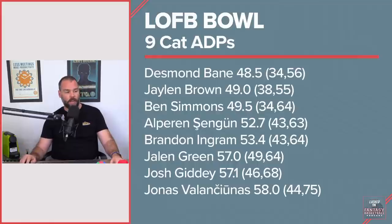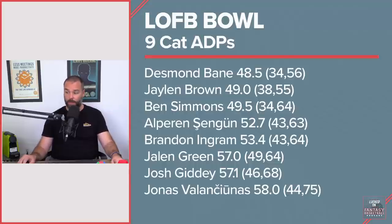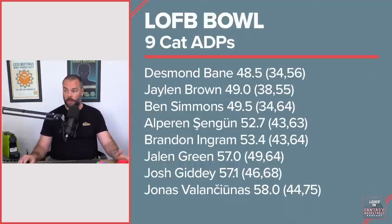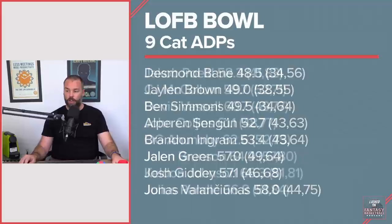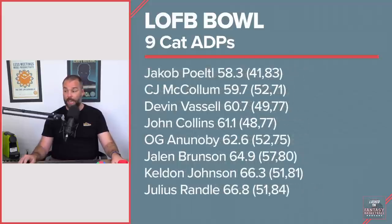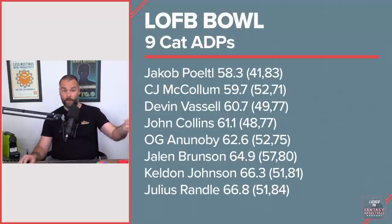Jonas Valanciunas had an ADP of 58 — he often goes around 52. His highest was 44 but he fell to 75. I think he could be 70th or 80th this season; that is distinctly possible. Big range here on Jakob Poeltl — 58.3 was his average, going from 41 to 83. Tank, trade, and free throw percentage are all issues; 41 is too high.